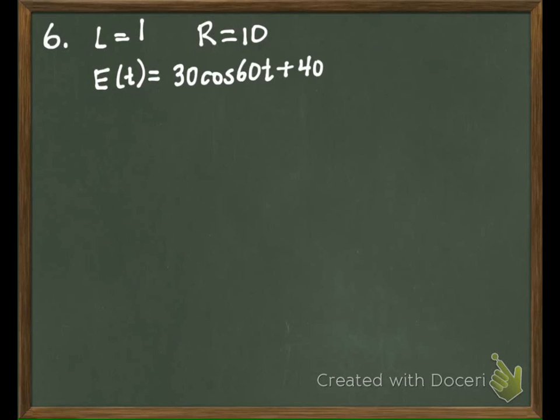And you are told here that L is equal to 1, R is equal to 10, and E is equal to 30 cosine 60t plus 40 sine 60t. There's your forcing function.